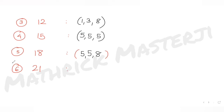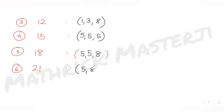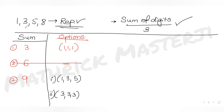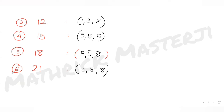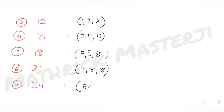Next case: sum = 21. Taking two eights: 8+8 = 16, leaving 5, so {5, 8, 8} works since 5+8+8 = 21. Other combinations don't work out. The next multiple is 24, which is the maximum possible since 8+8+8 = 24, giving us {8, 8, 8}. So 24 is the highest possible sum.